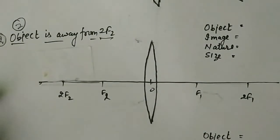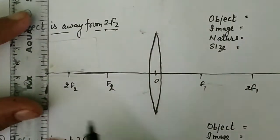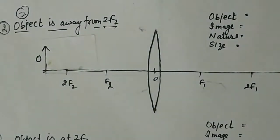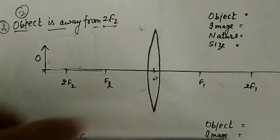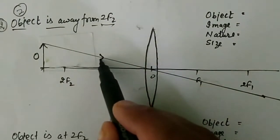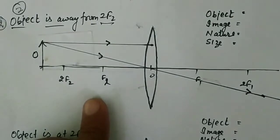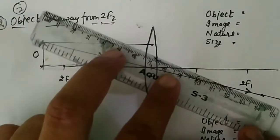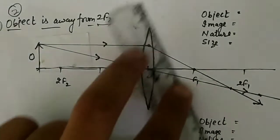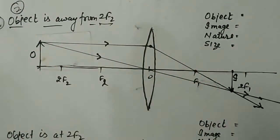Now the second case: when your object is away from 2F2 — the object is closer to the lens but still beyond 2F2. I take my object here. I will draw two rays whose rules are known. The first ray passes through the optical center — it goes without any deviation. The second ray is parallel to the principal axis and will pass through principal focus. Where the two refracted rays meet, that is our image.